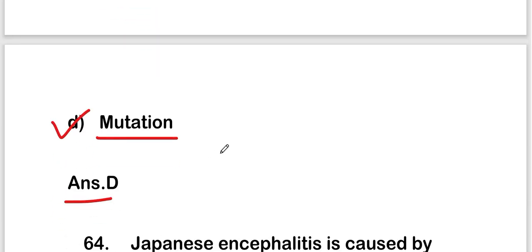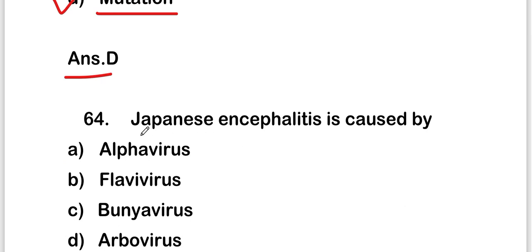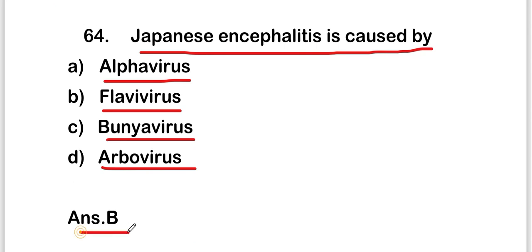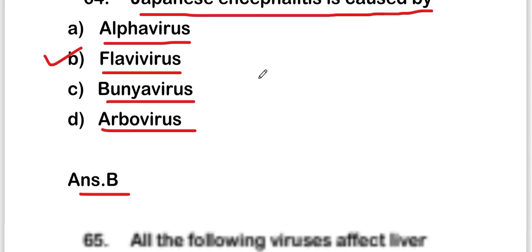The next question is: Japanese encephalitis is caused by alpha virus, flavivirus, bunyavirus, or arbovirus. The right answer is option B — flavivirus. So Japanese encephalitis is caused by flavivirus.